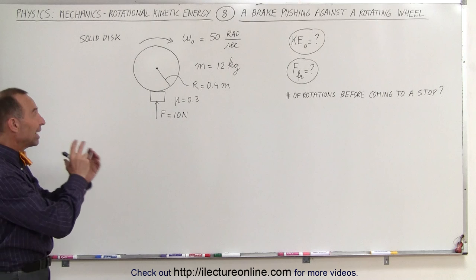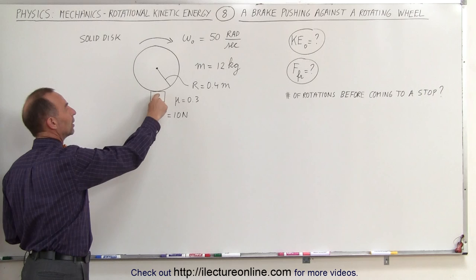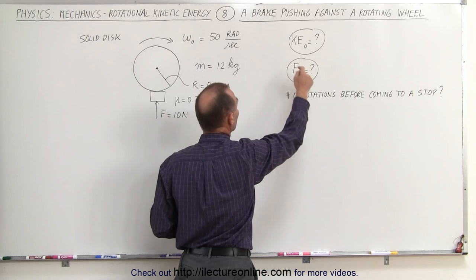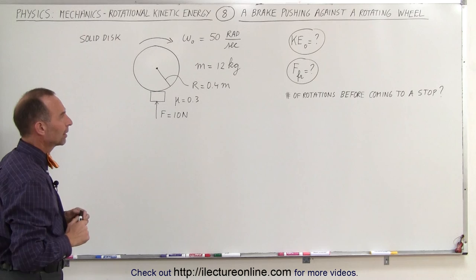Welcome to ElectronLine. In this example we have a rotating wheel. It's stationary and rotating, so it only has rotational kinetic energy. Then we push a brake against the wheel. Notice that the coefficient of friction between the wheel and the brake is 0.3, and the force at which the brake is applied is 10 newtons. We want to calculate the initial kinetic energy of the rotating wheel, the friction force, and the number of rotations before it comes to a stop after the brake is applied.